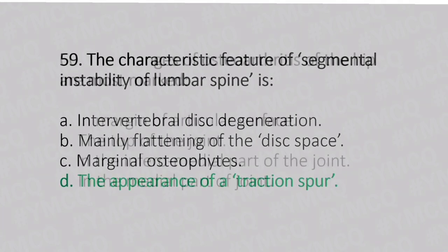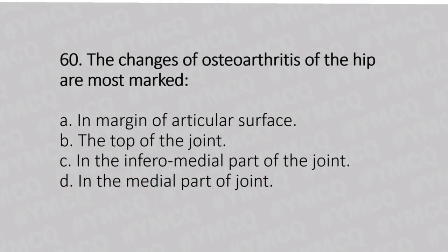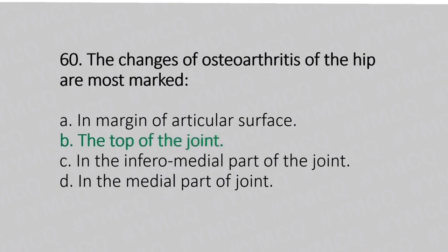Now let's move to question number 60. The changes of osteoarthritis of the hip are most marked. Option A: in the margin of the articular surface. Option B: the top of the joint. Option C: in the inferior medial aspect of the joint. Option D: in the medial aspect of the joint. And the answer is Option B, the top of the joint.